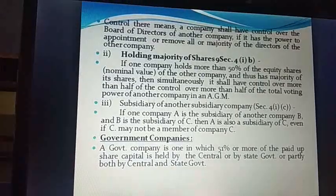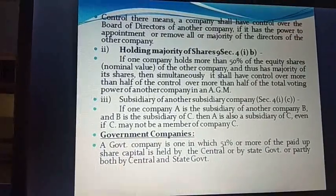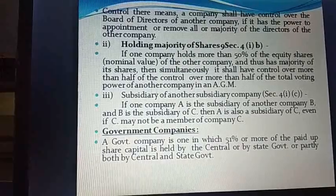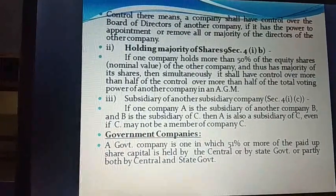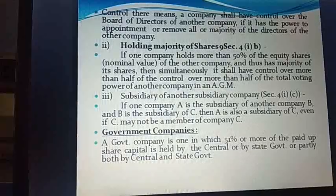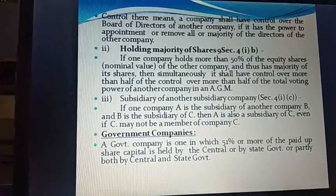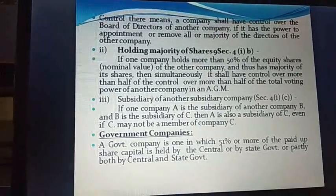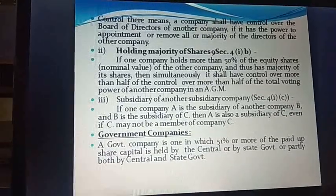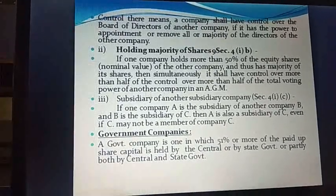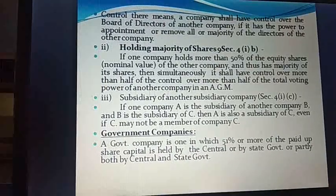The second point of holding and subsidiary is holding majority of shares. I explained this well in the previous video. When one company holds more than 50% of shares of another company, it naturally has a majority of voting rights, which is another way of having control over the other company.